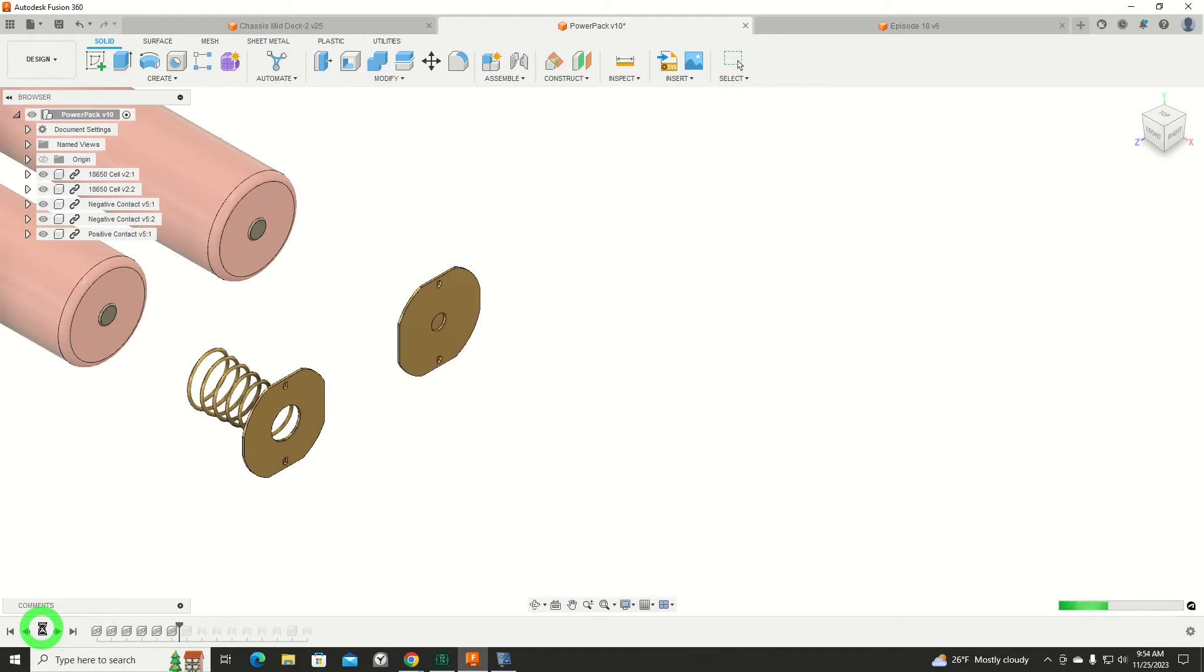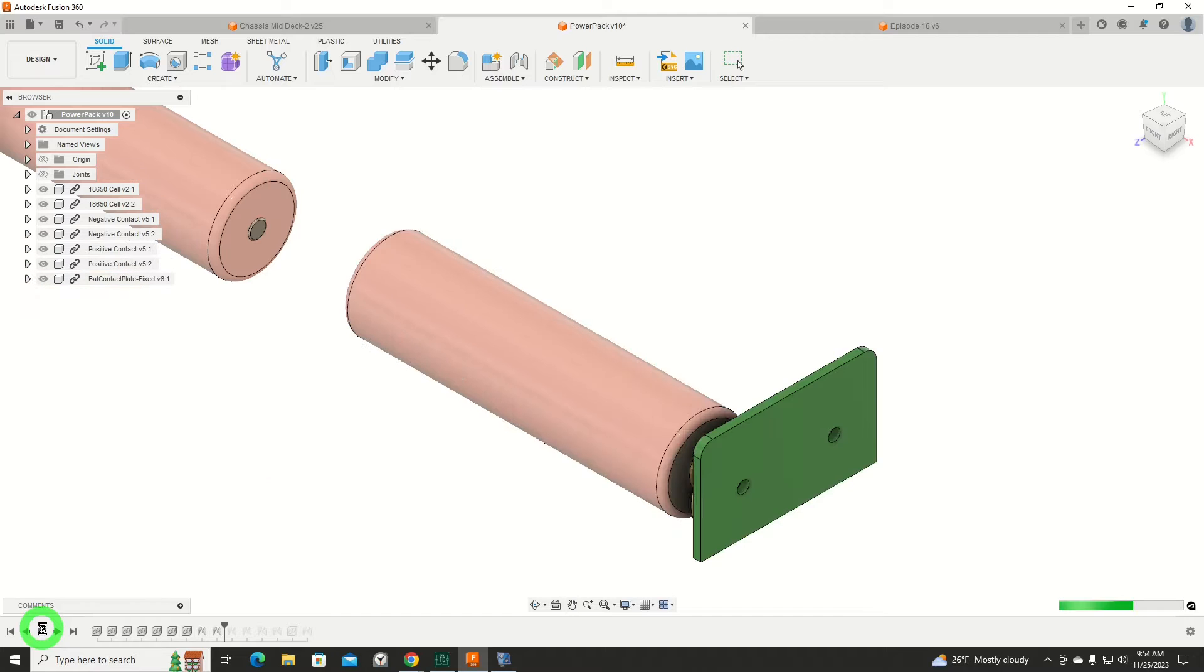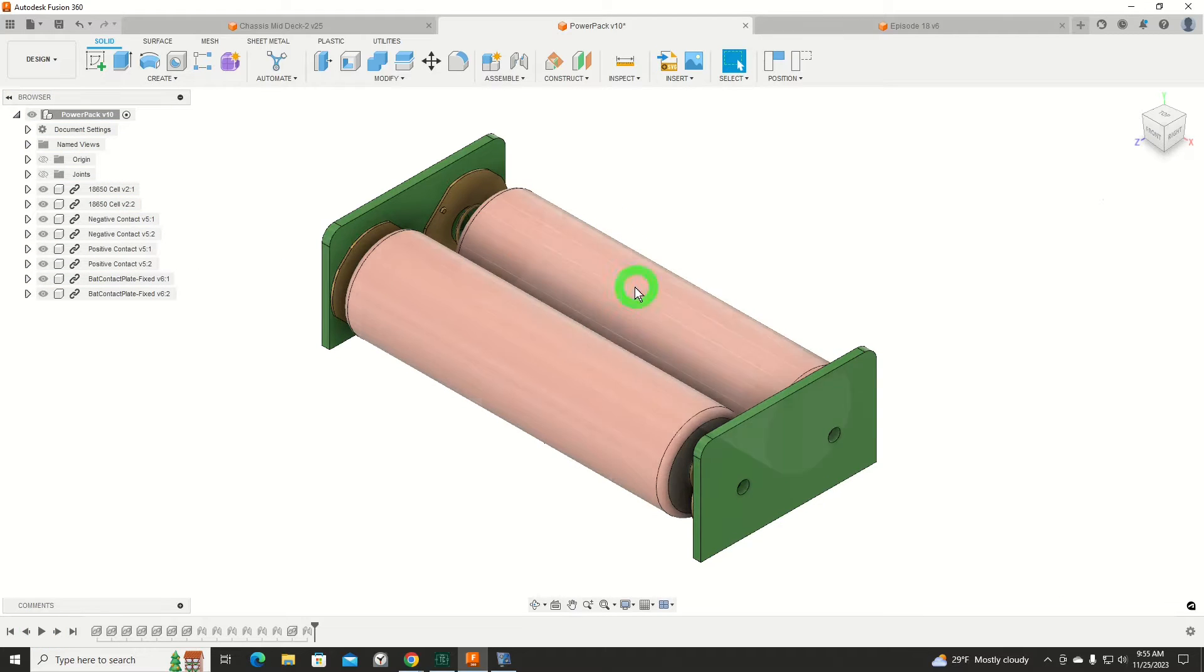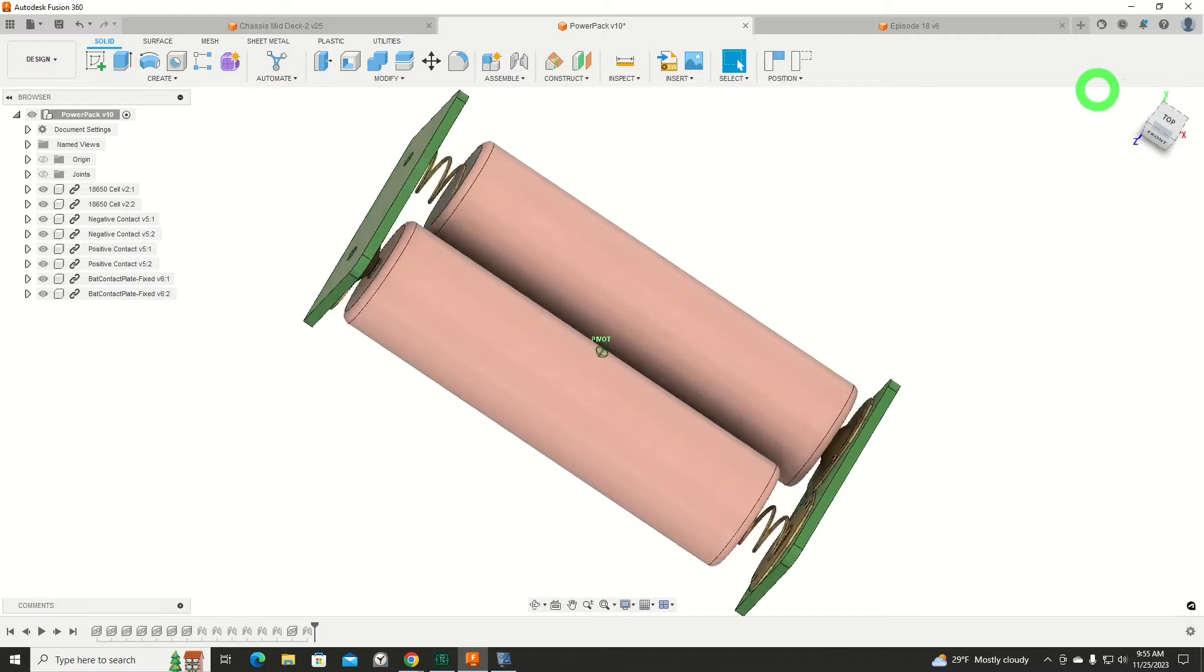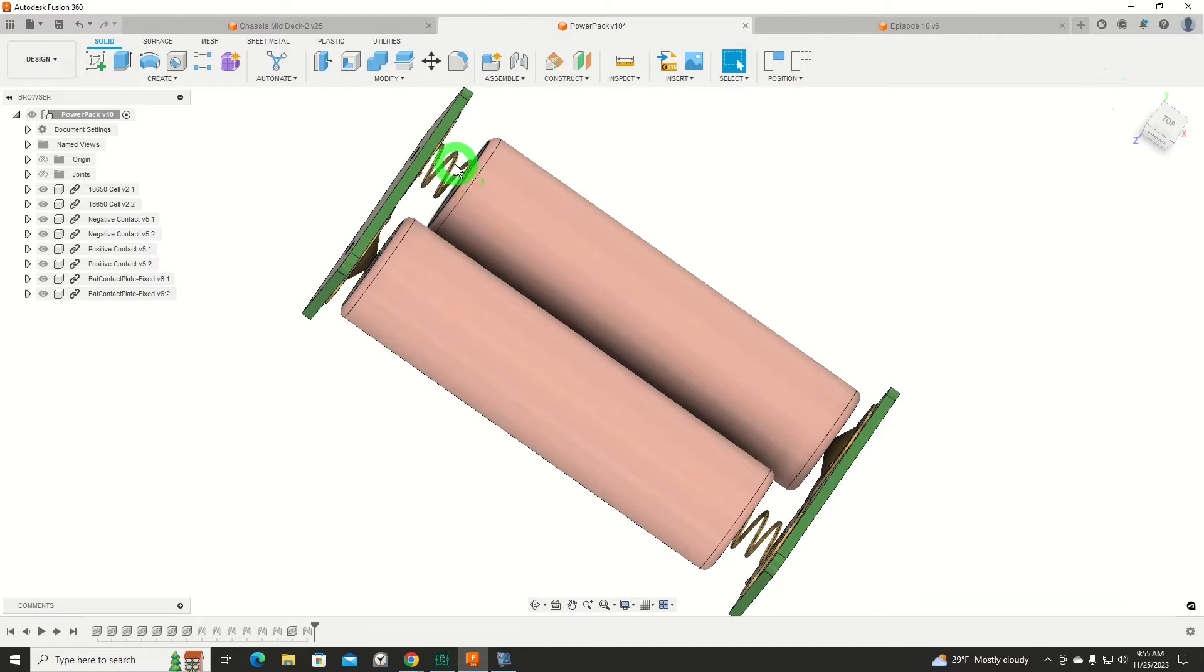This will show you roughly how all the components go together. And here we can see the two 18650 cells, a spring-loaded contact here for the negative side, and a solid contact for the positive side of the battery. Negative over here, and positive over here. So as you can see, this will be wired up in series.